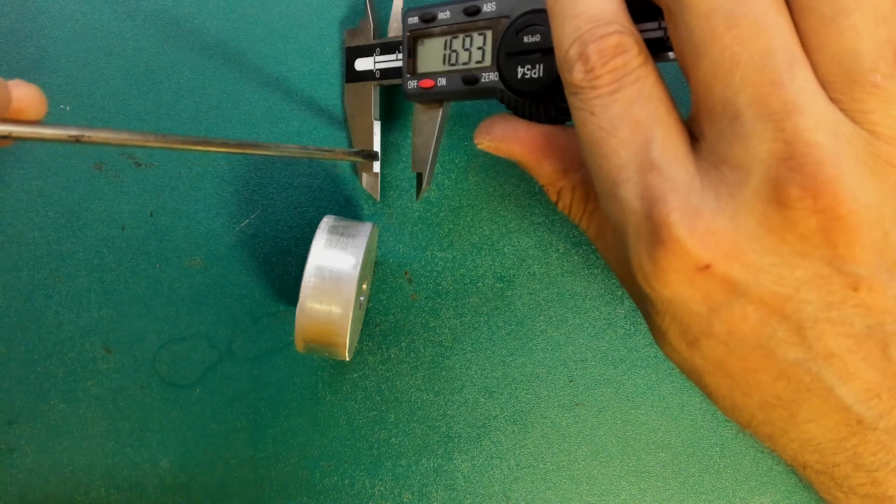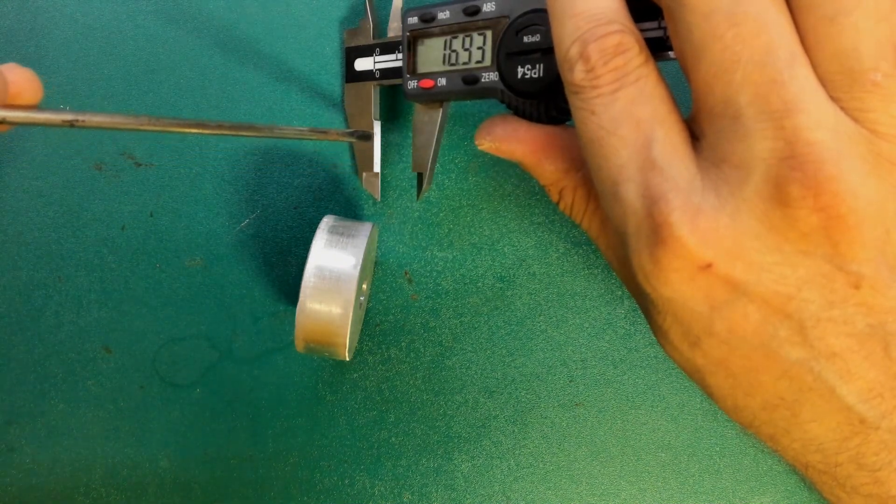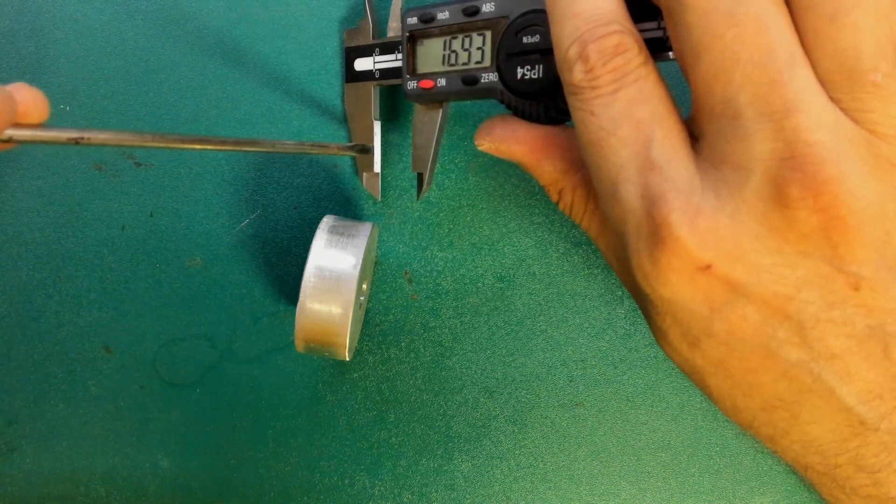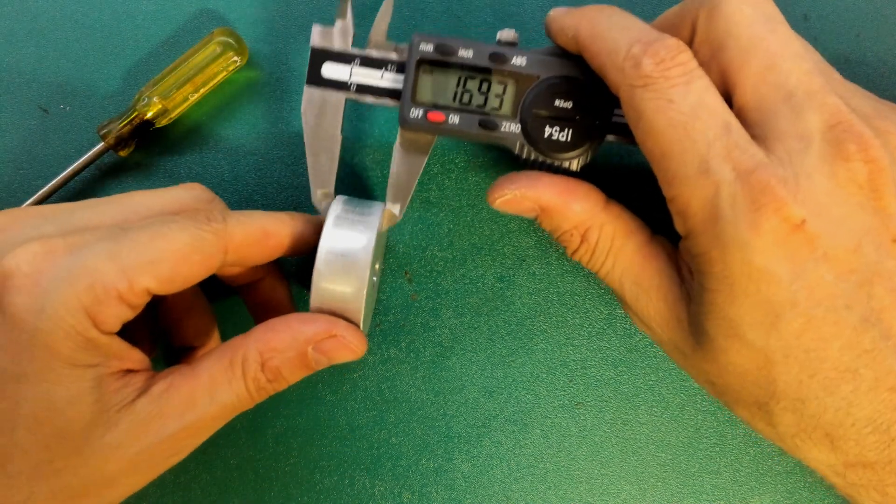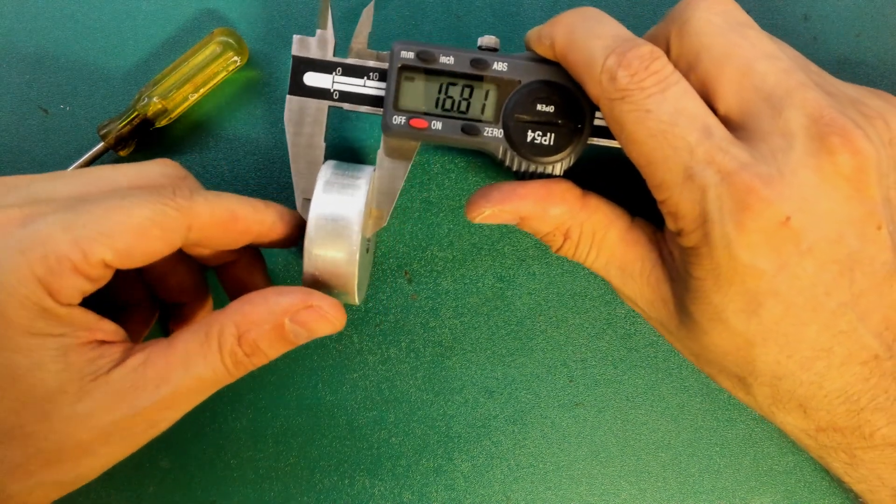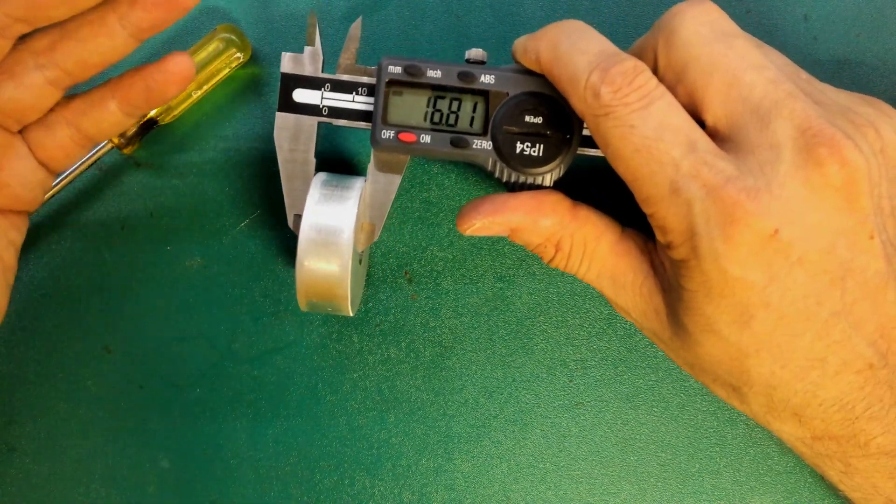The other thing to consider is that it's very easy to measure parallel surfaces. You can see here on the vernier caliper jaws that there's a flat surface that will push against these flat surfaces and so the measurement could be reasonably accurate.